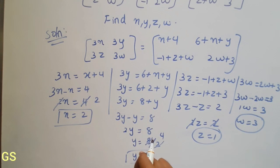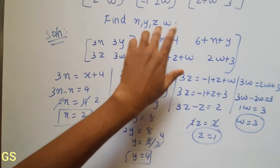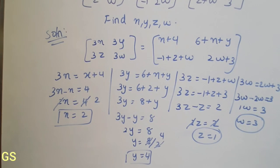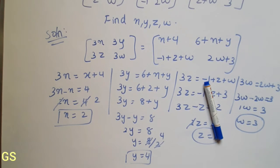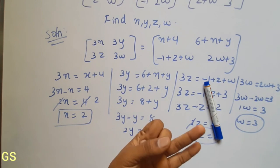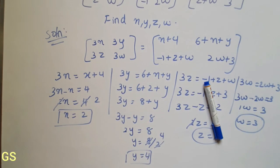So the answers are: x equals 2, y equals 4, z equals 1, w equals 3. That is the 12th sum answer. In this video, we covered the 10th, 11th, and 12th sums — 3 sums in total. Ok friends, thank you! Bye!